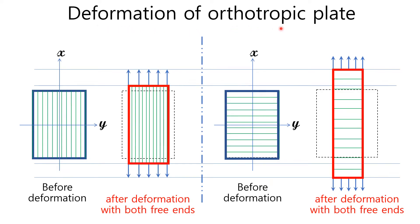Let's talk about the deformation of an orthotropic plate. An orthotropic plate has mechanical properties that are different in two mutually perpendicular axes. The green line stands for the steel cord reinforcement. In this example, the extended length of the left tie is shorter than that of the right tie at the same amount of extension force, because the direction of the steel cord is different. These two axes are called principal axes.